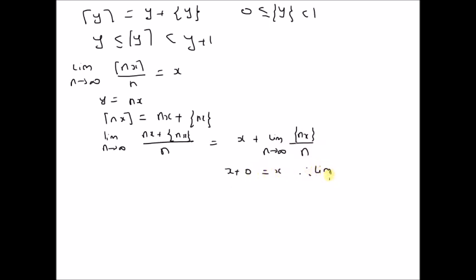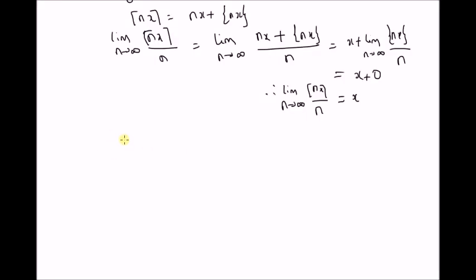Therefore, the limit as n tends to infinity of the ceiling function of nx divided by n equals x. Similarly, the floor function is defined as the floor of nx equal to the real number nx minus a small fraction, where this fraction is also between 0 and 1.